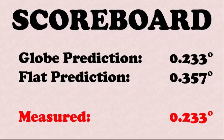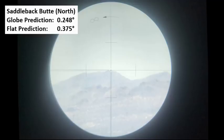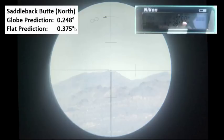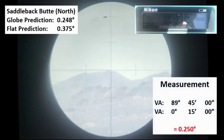But it wasn't just Saddleback South. I did Saddleback North, which you'll see here. So again, using the same mathematics, the globe prediction was 0.248 degrees. And the flat earth prediction was 0.375 degrees. Here is the screen of the theodolite at the time of making the observation. So you can see that it is 15 minutes above horizontal or above eye level. And that works out to be 0.25 degrees against our globe prediction of 0.248. So obviously, that's another winner as well.